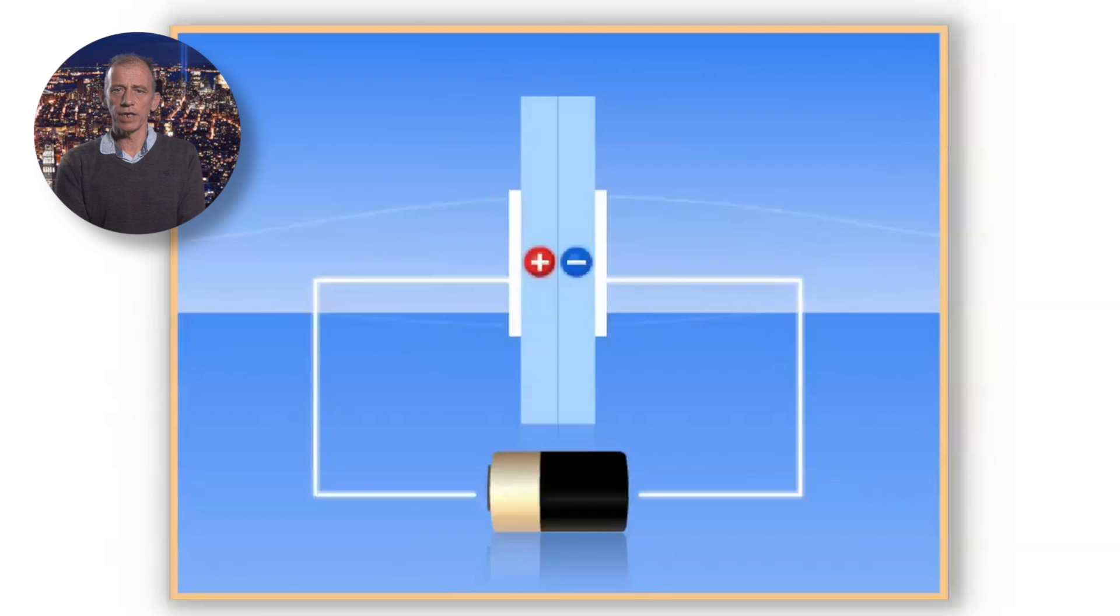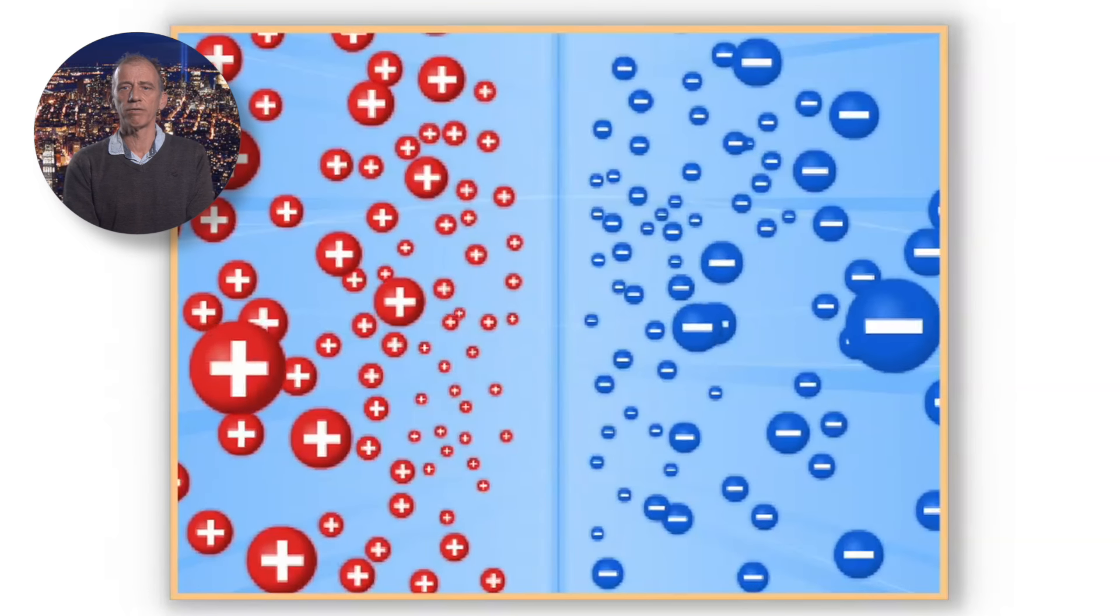When a current supply is connected to the diode, the negatively charged electrons are forced to move one direction and the positive holes move in the opposite direction.